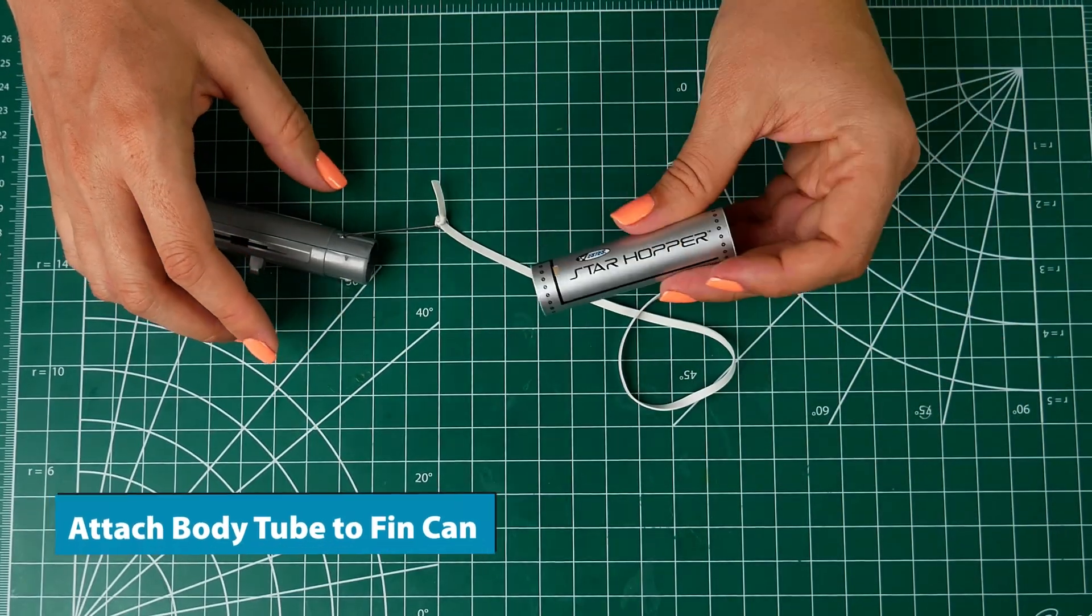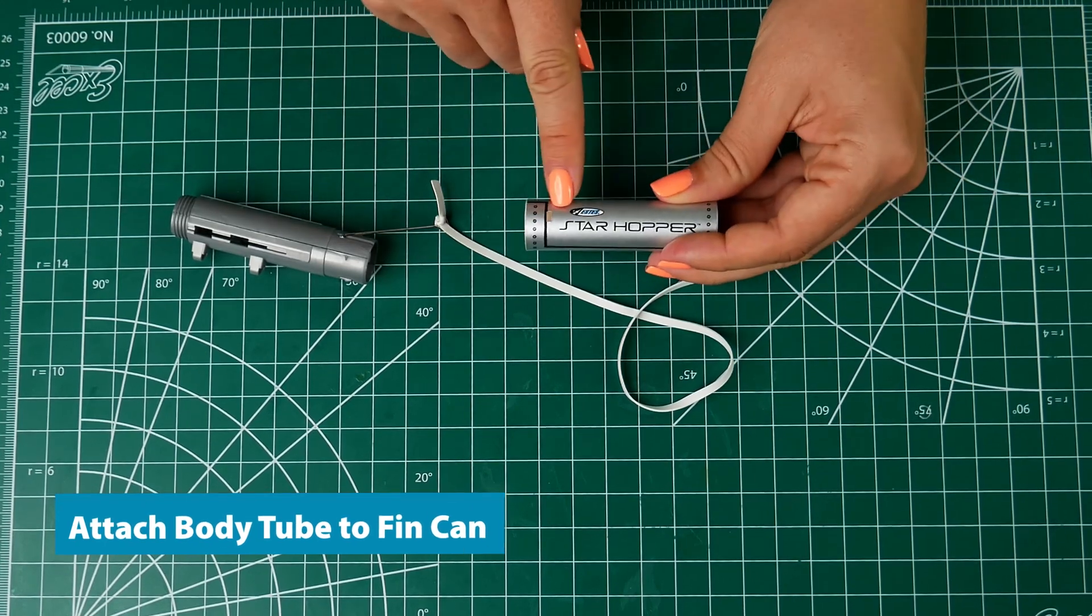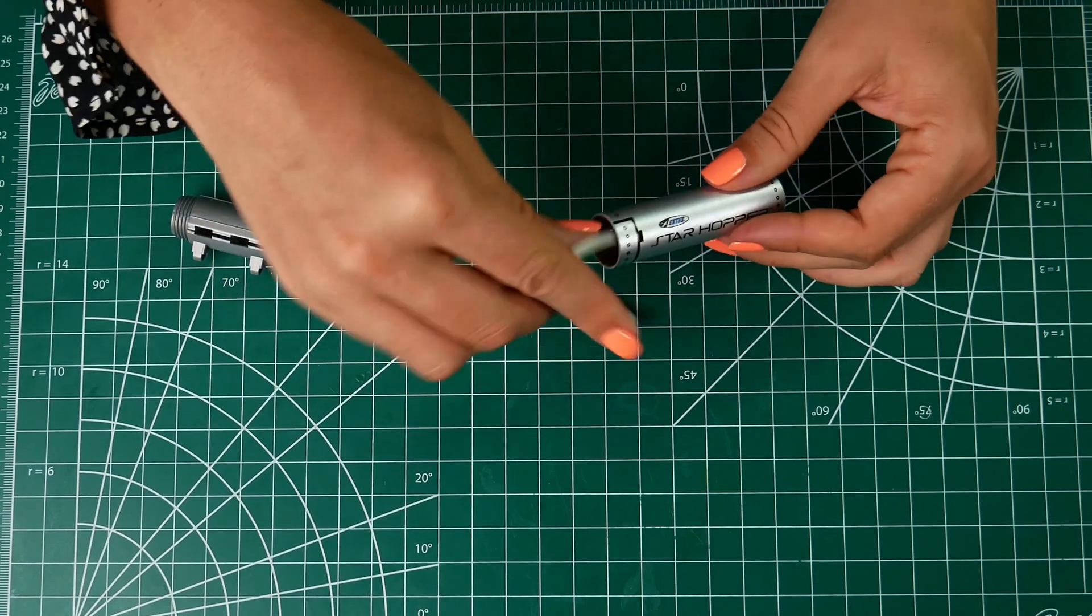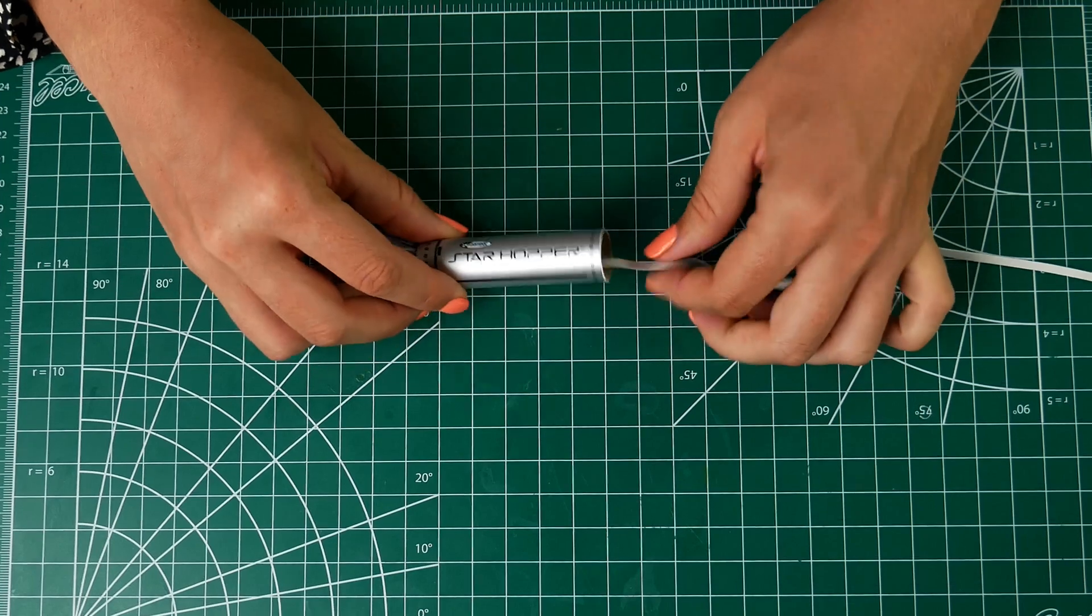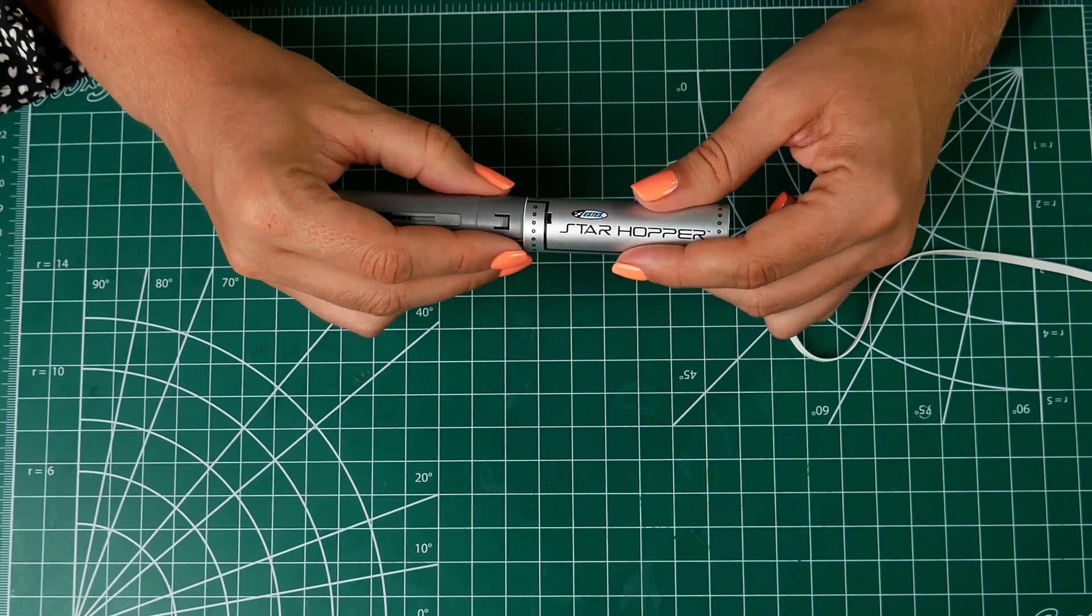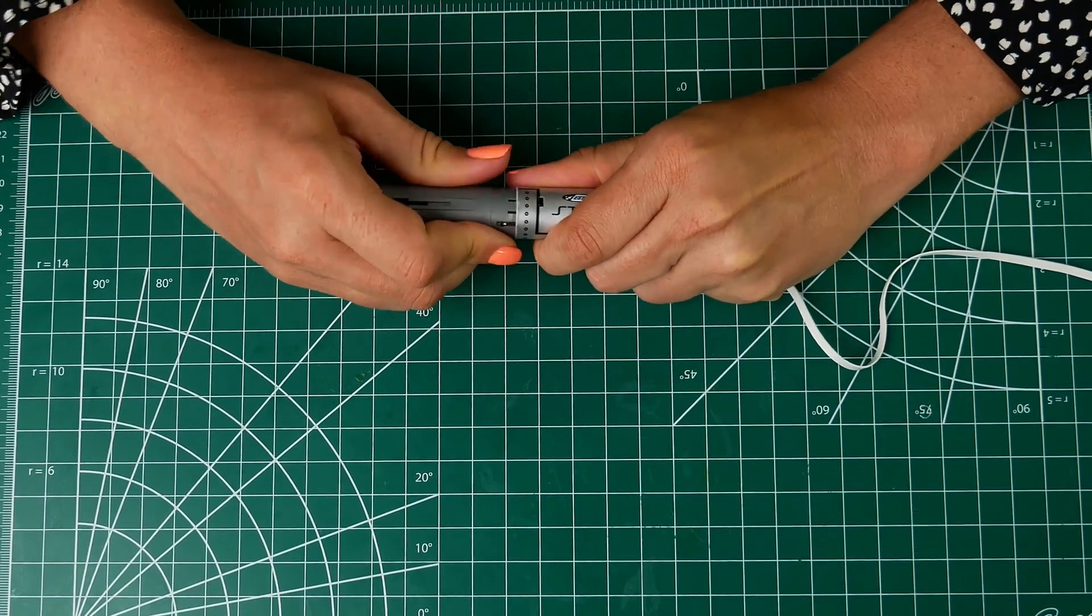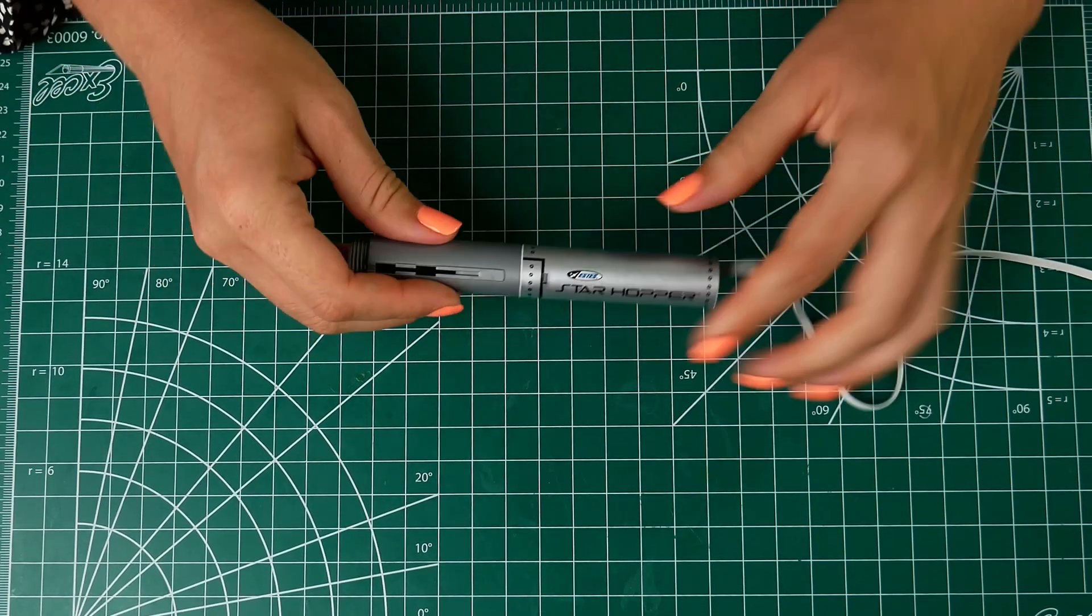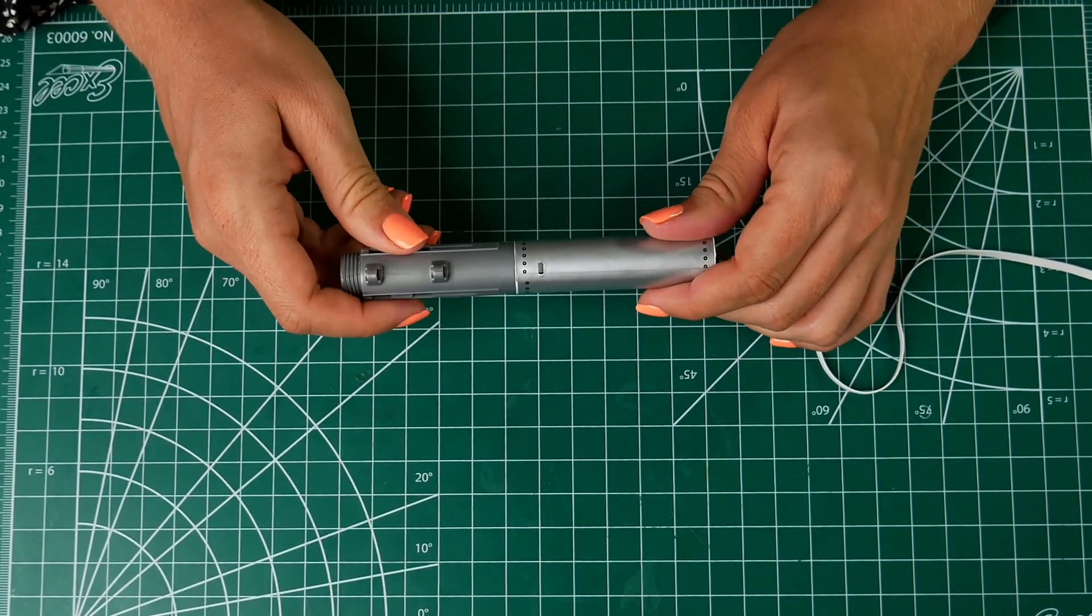Now you're gonna take the body tube and find the little holes on it. Those are gonna go down towards the fin can and you'll take your shock cord and just put it through the body tube. And then make sure that these holes are aligning with these little plastic parts where it's gonna clip on. So then once that is clipped on, those little gray pieces should come in through those little holes.